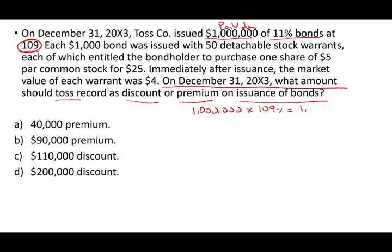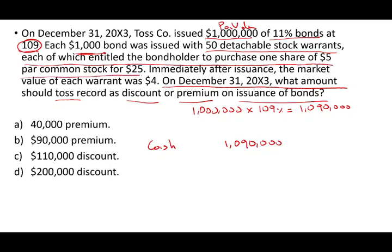The best way to do this is to start to journalize the entry. We debit cash $1,090,000. I need to know what's the premium and the discount — I do need a journal entry. Each $1,000 bond was issued with 50 detachable stock warrants.